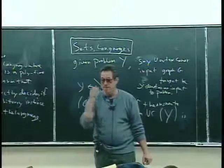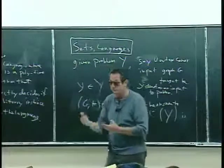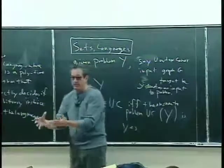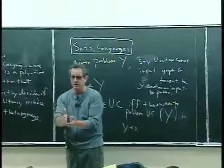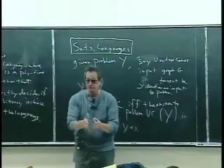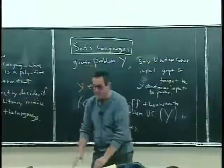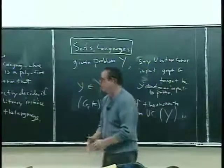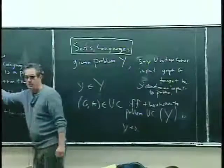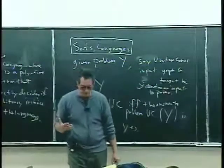Shortest path — if we turn it into a decision question, if we said: here's a graph and here's a target, is there a shortest path that's less than or equal to that length? Yes, that's definitely so, because we've seen polynomial time algorithms for that problem, and that's in P.